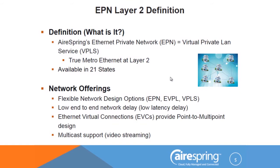What they're asking for is true Metro Ethernet at Layer 2 — an Ethernet connection at each of your sites. You connect to it, your networks are connected, you have one big LAN. We call this Metro Ethernet because it covers the entire metro area. AirSpring is going to be adding more Layer 2 carriers and will cover a 21-state footprint to begin with. This is a true Layer 2 Ethernet LAN running between multiple locations at various speeds. We'll see three different network designs: EPL, EVPL, and VPLS.